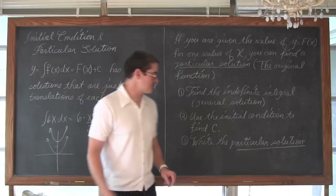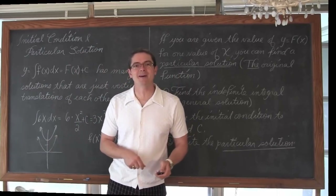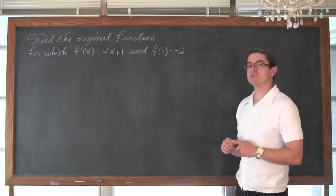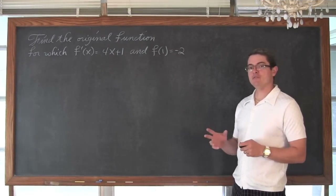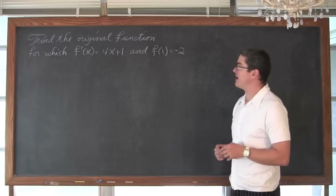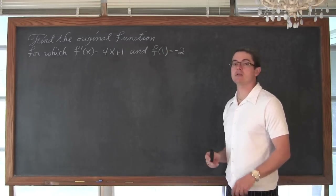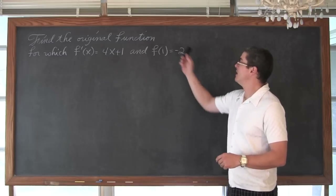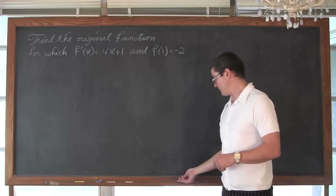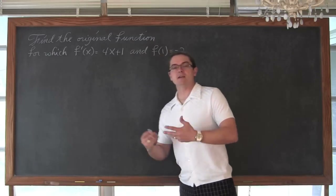We are going to do two examples, so this will be a fairly quick video. So, we have the problem: find the original function for which f prime of x is equal to 4x plus 1, and f of 1 — so the prime symbol is gone now, we are talking about the original function — f of 1 is equal to negative 2. Of course, first we need to find the antiderivative.